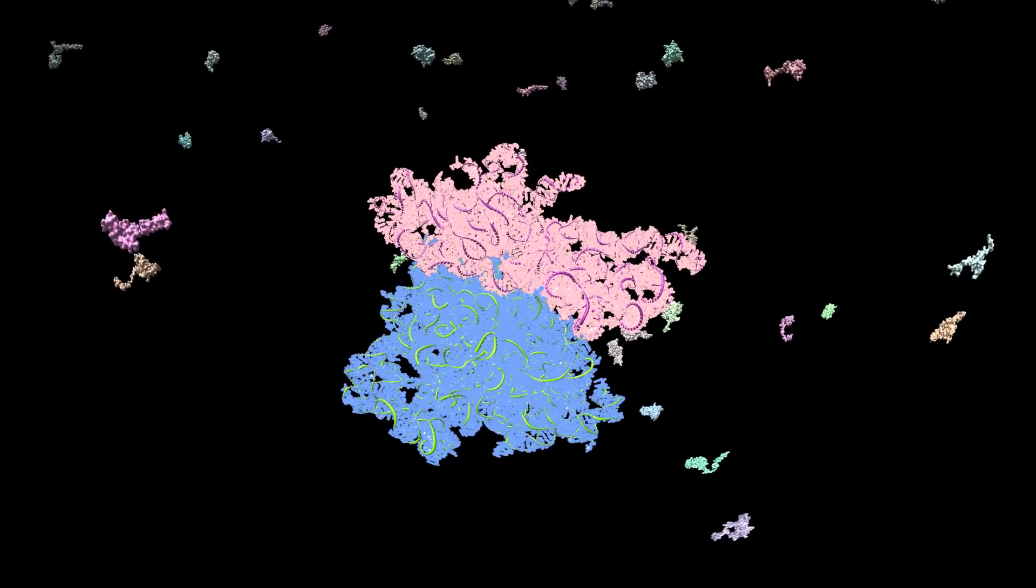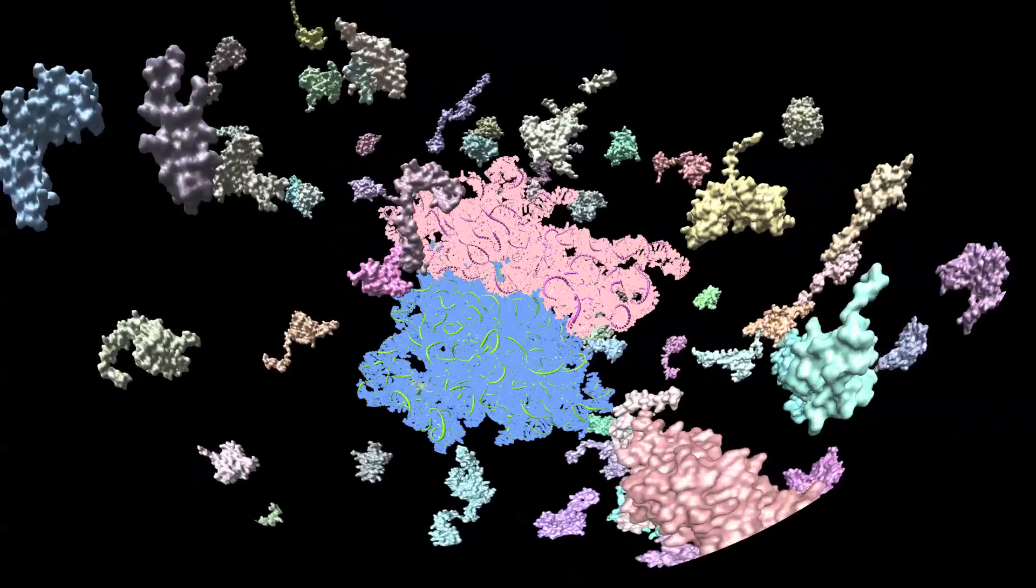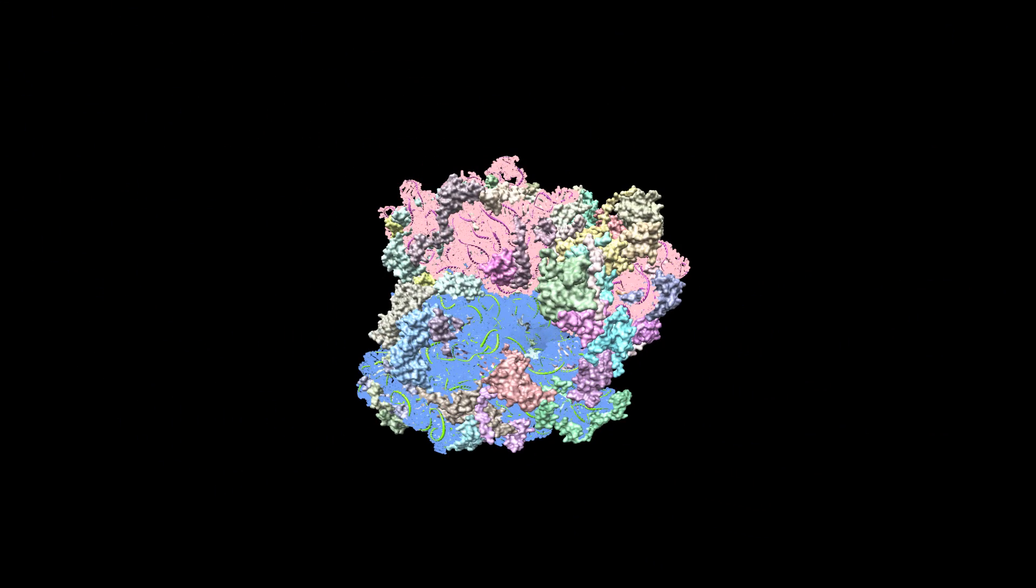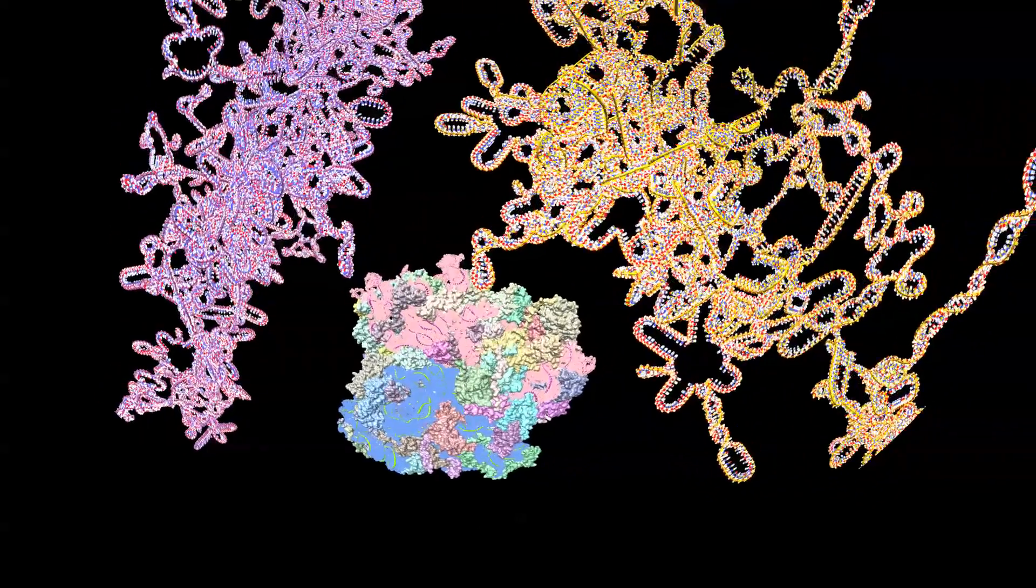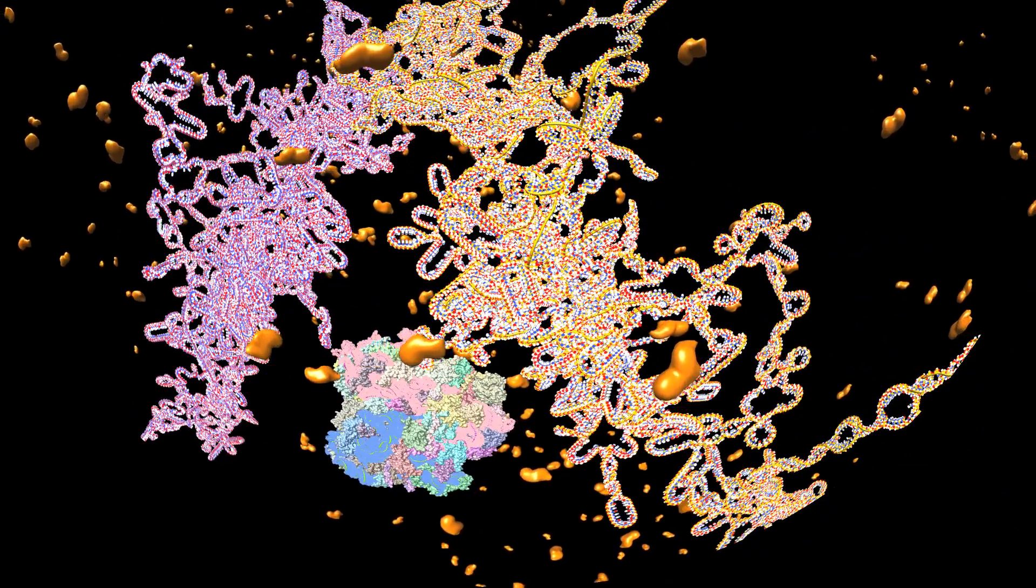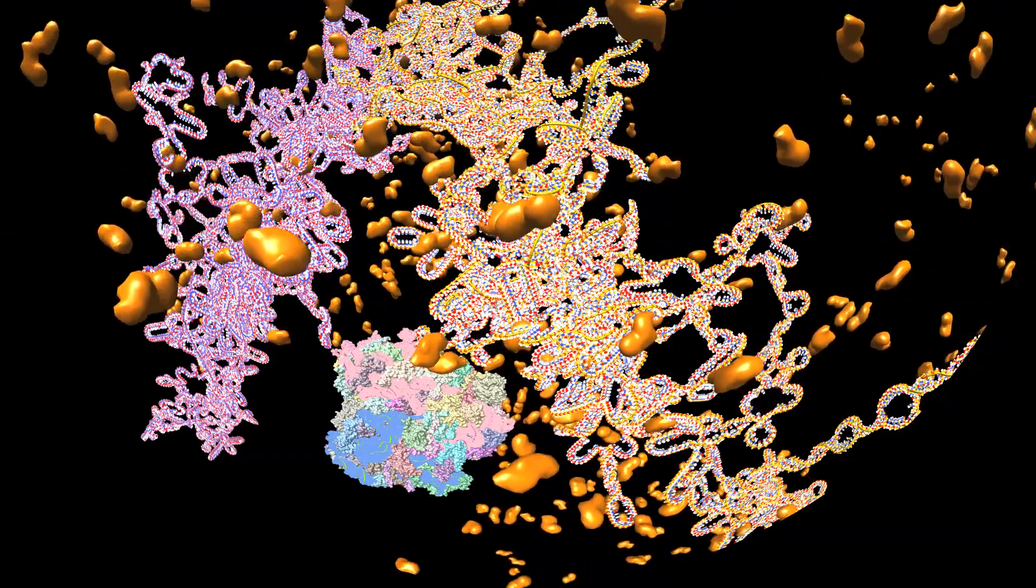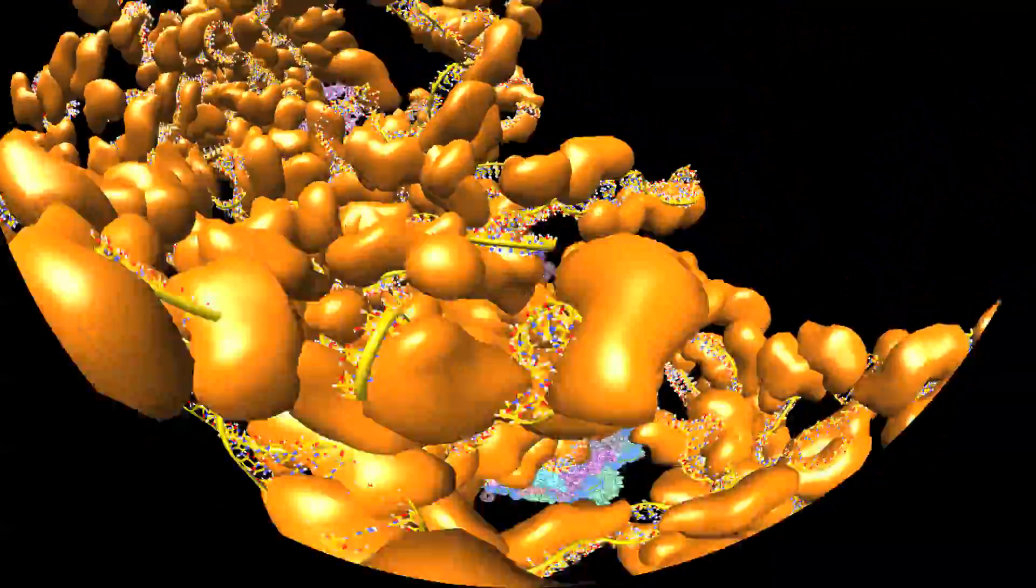A ribosome is decorated with about 75 different proteins. A strand of HIV RNA is covered by about 1,000 copies of nucleocapsid protein and smaller numbers of other proteins.